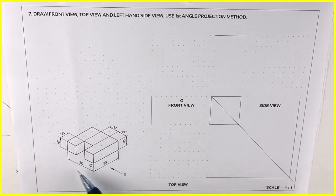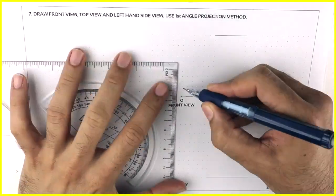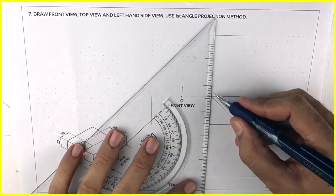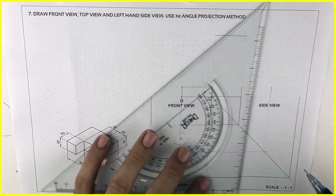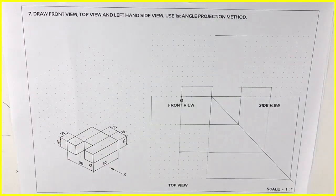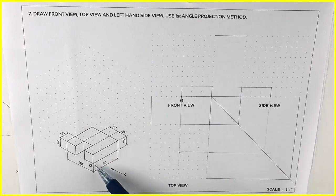Height is 10 and width is 30. So first we will draw a layout. Remember to draw a light layout and do not erase it. Once you're done with that, when you see from the front you will see this.